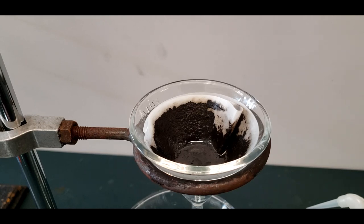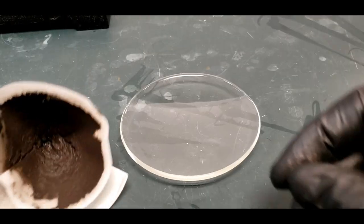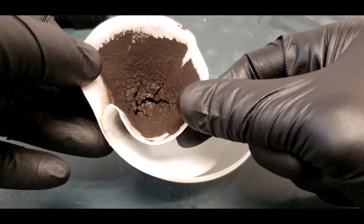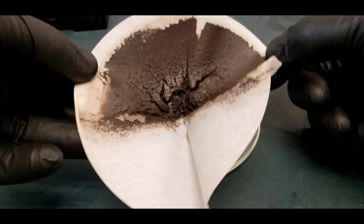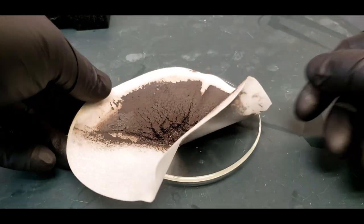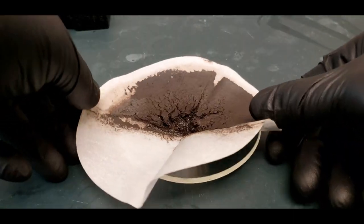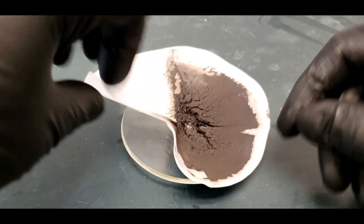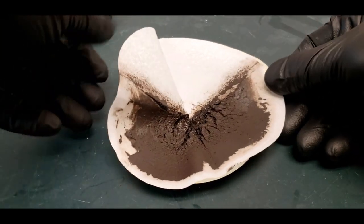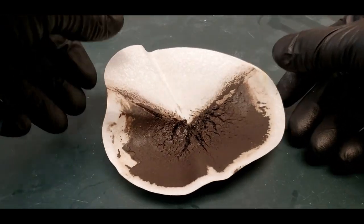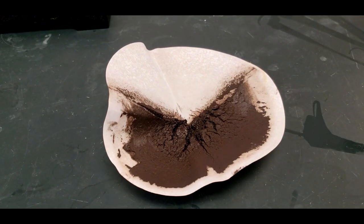On top of that, the ethanol and the acetone both are really volatile liquid. So they'll burn away or evaporate away very quickly in the oven. So we should have a dry sample within 15 to 20 minutes.